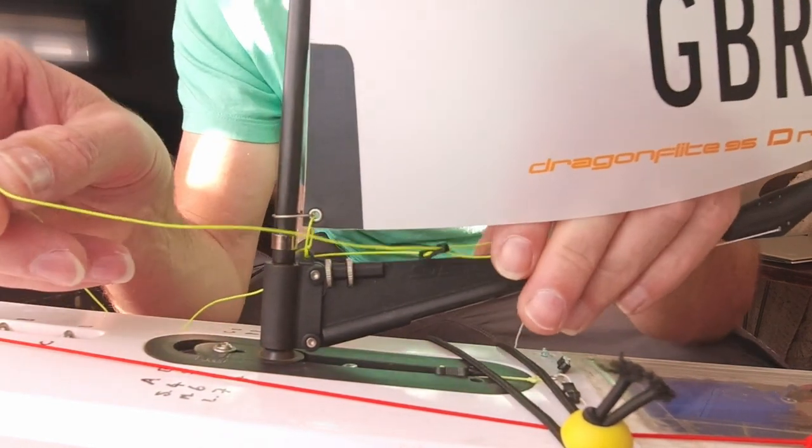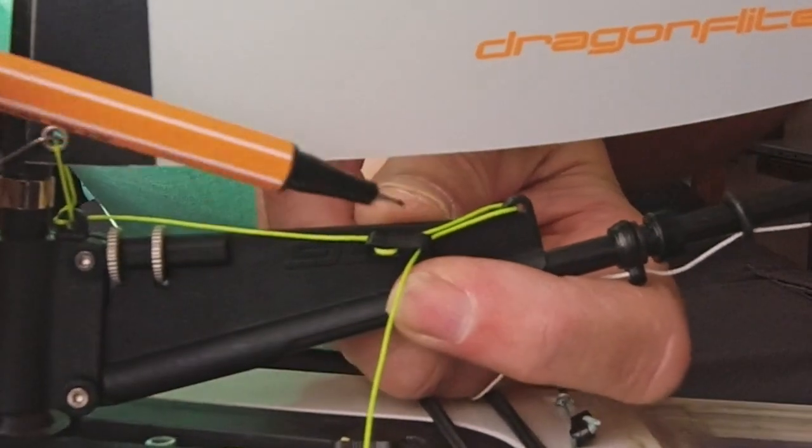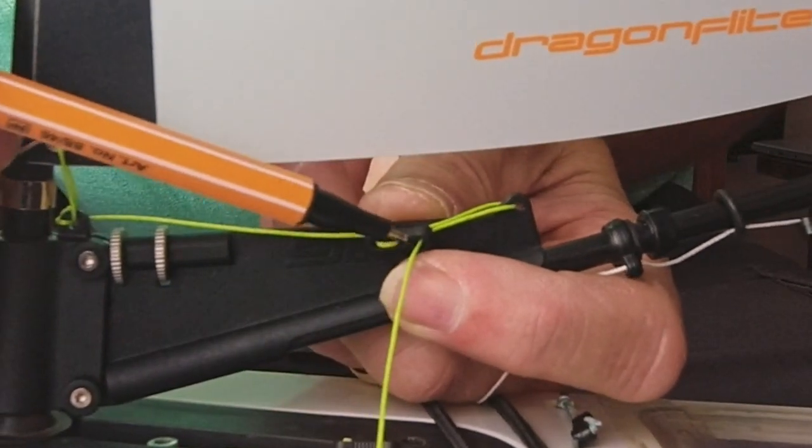Position the bowzie and pull any excess dyneema through. Mark the dyneema with a marker pen where you want the knot to be.